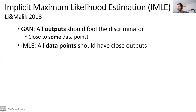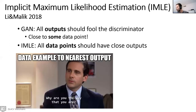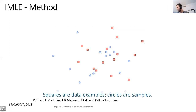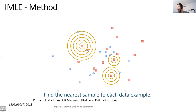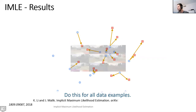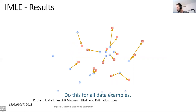IMLE comes to solve exactly this problem. IMLE says: I want all data points to have some close output. Every data example says to its nearest output — I want you to be closer to me. This avoids mode collapse and is easier to train — we only have one neural network with a very straightforward goal. We start again with squares and circles, but now each square looks for its nearest circle and tries to bring it closer. After training, no mode is left without a nearest sample — every mode is represented in the output. For a segmentation map to real life image task, IMLE produces many possible outputs because it does not drop any modes.